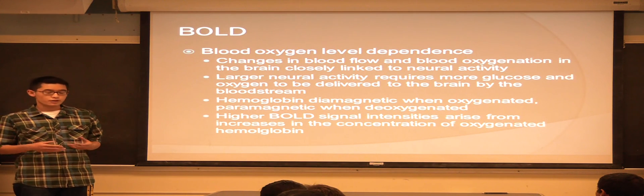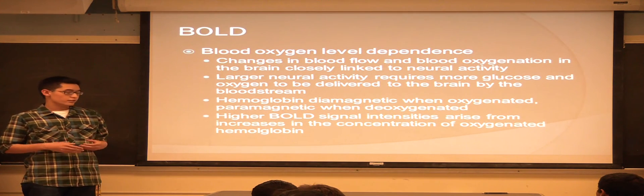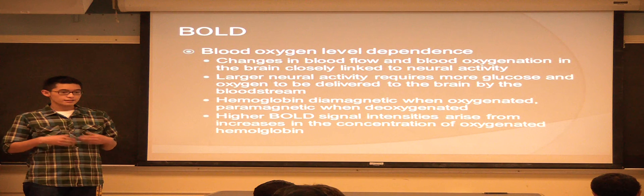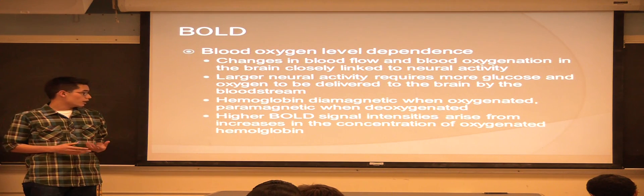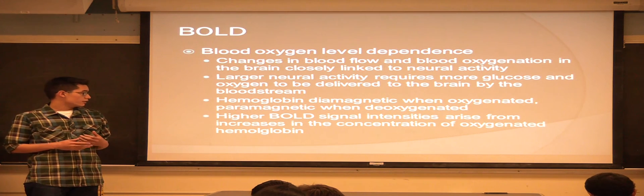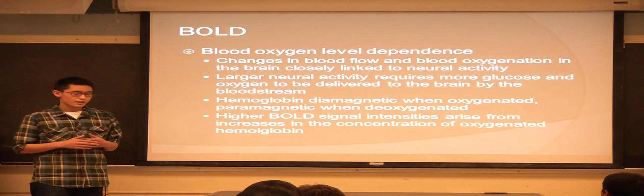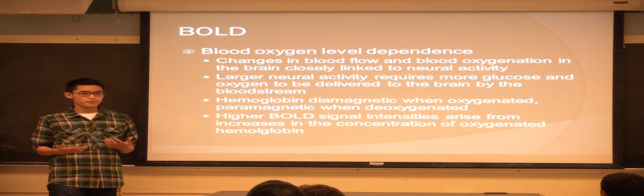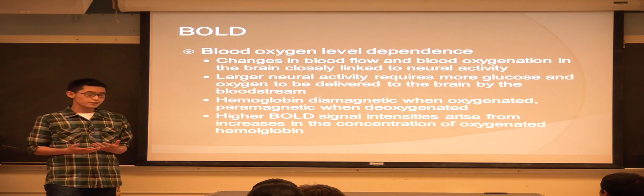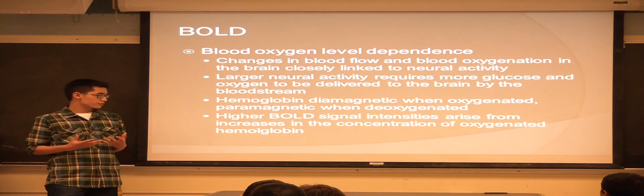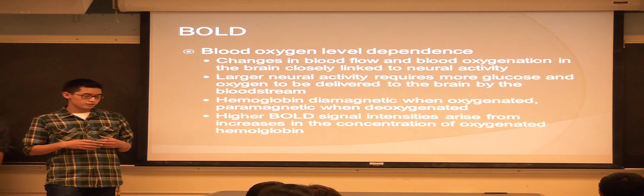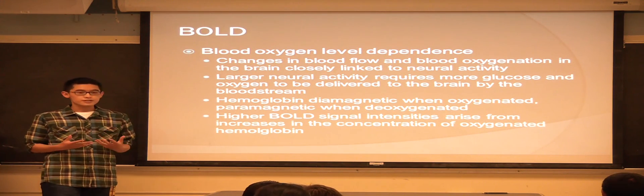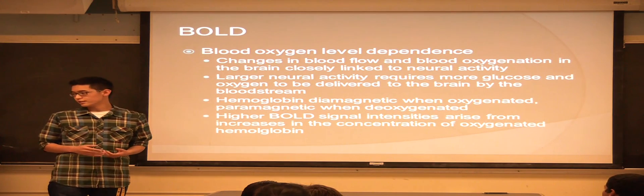The larger the neuroactivity in the brain, the more glucose and oxygen that needs to be delivered to the brain by the blood vessels. Within the hemoglobin, the hemoglobin is diamagnetic when oxygenated and paramagnetic when deoxygenated. And the higher the BOLD signal is, it means that there is an increase in the concentration of oxygenated hemoglobin.